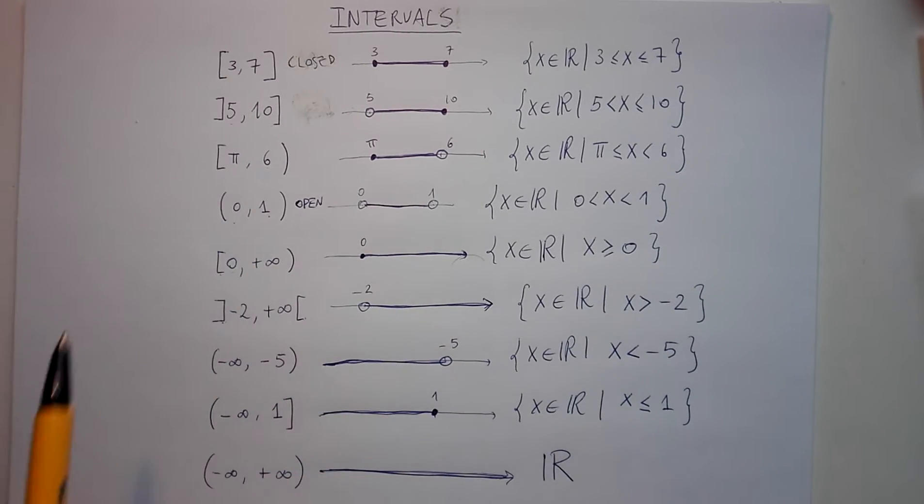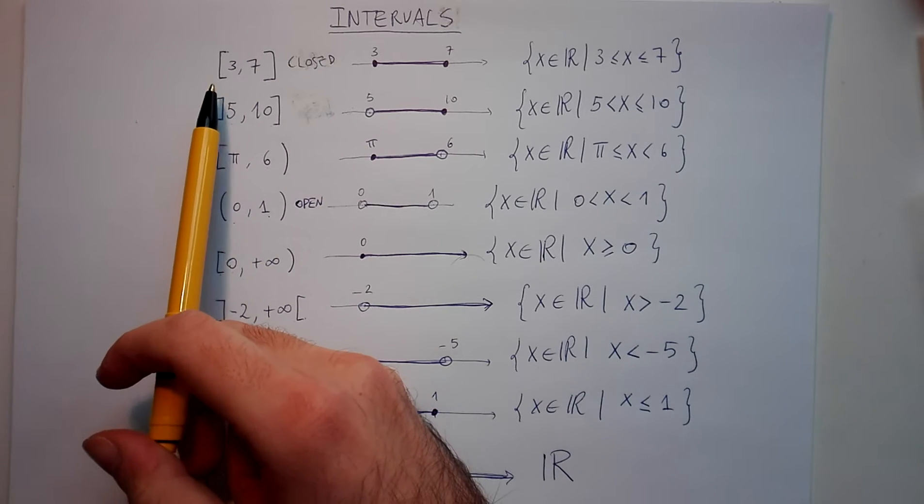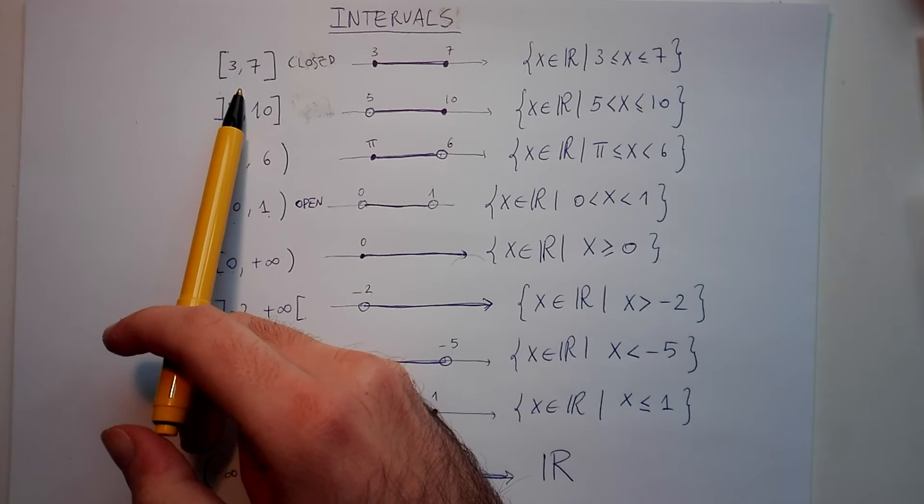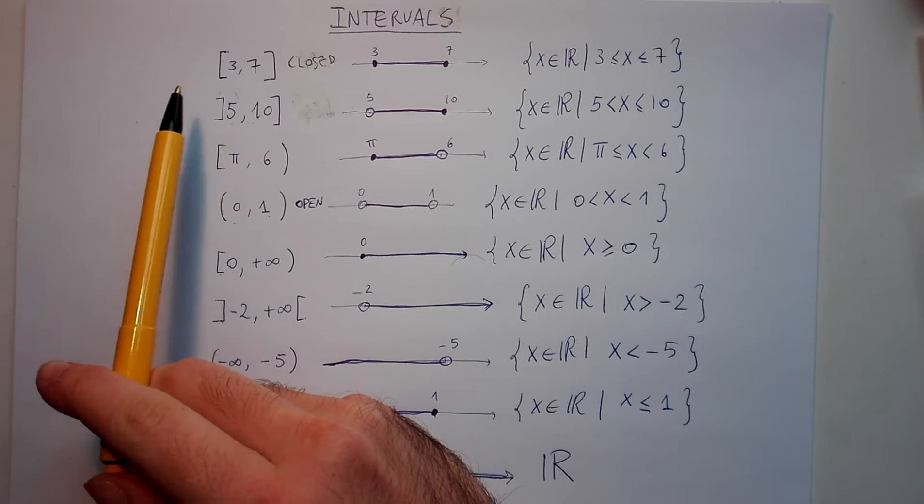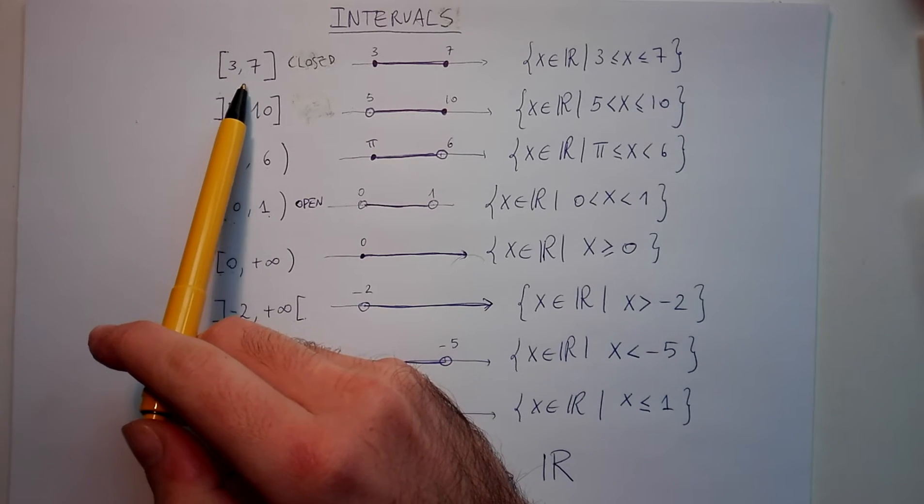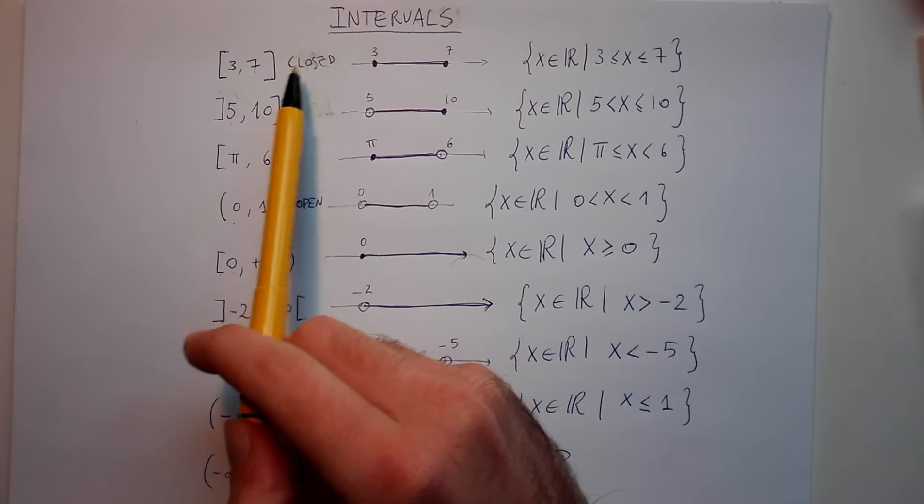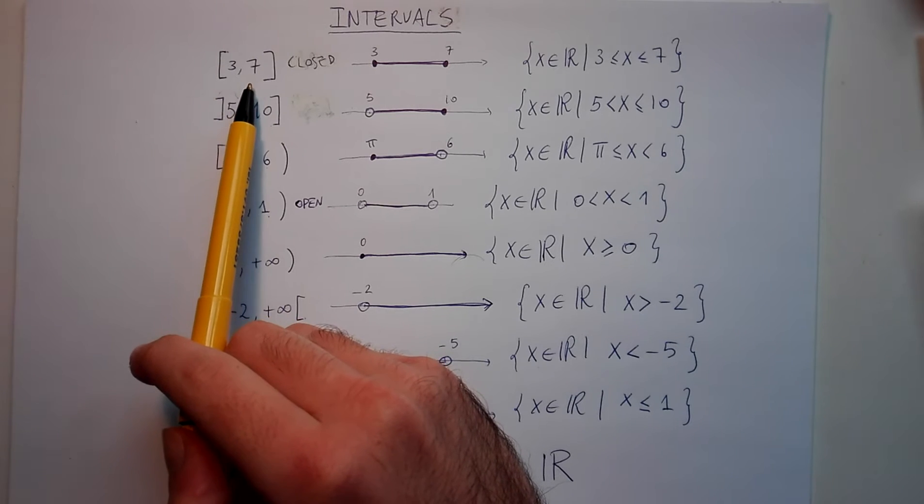So I have here some examples that will clarify the notation. When you write square brackets and then two numbers, that means all the numbers between these two numbers, including these two numbers.